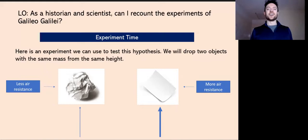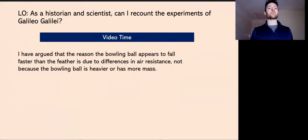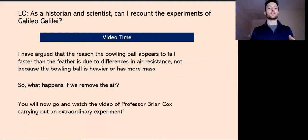Don't just take my word for it. We're going to have people who know a lot more about this stuff than me explain it to you. So, I've argued that the reason the bowling ball appears to fall faster than the feather is due to differences in air resistance, not because the bowling ball is heavier or has more mass.